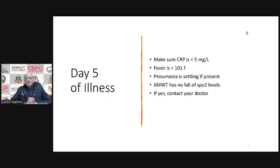If pneumonia is not settling by Day Three, D-dimer starts rising and platelets start falling — polymorphs are rising in your body. Your D-dimer is rising, your platelets may be falling. D-dimer will rise and platelet count will fall by at least thirty percent. Therefore, agar Day Five mein aapka pneumonia complicate ho raha hai, toh ye clot wala pneumonia hai — inflammation wala pneumonia Day Three tak hota hai.